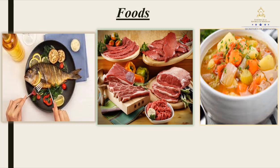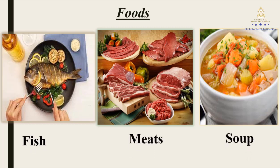As you can see, we have here three different pictures, three different kinds of foods. The first one is fish, the second one is meats, and the third one is soup. So listen: fish, meats, soup. Now you are going to repeat after me. Fish, meats, soup. Excellent!